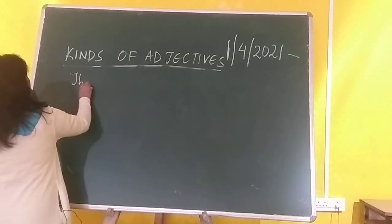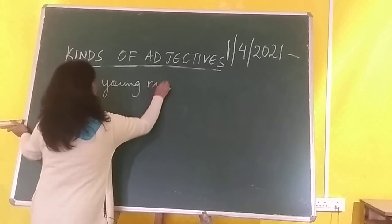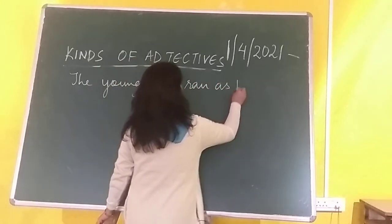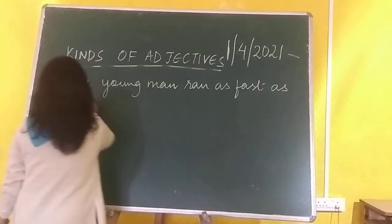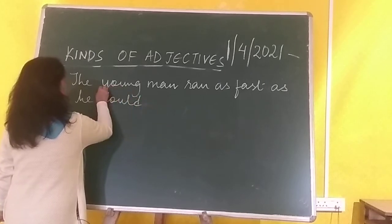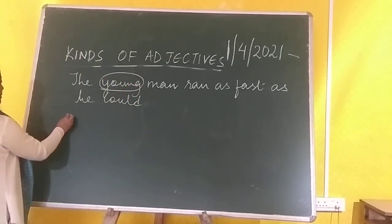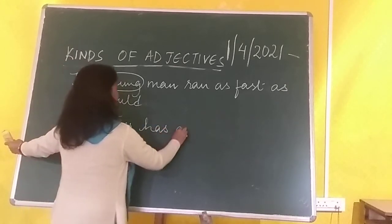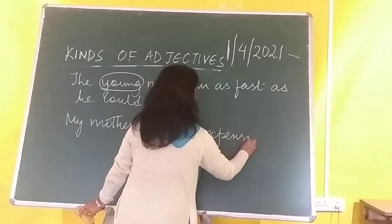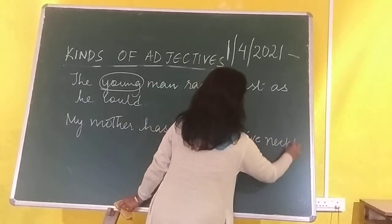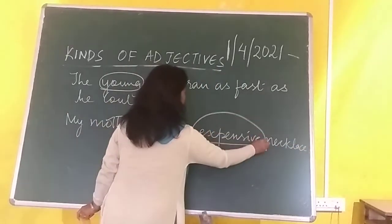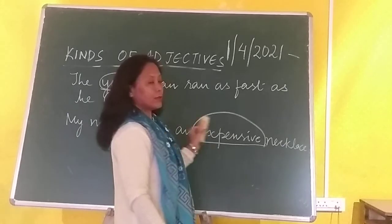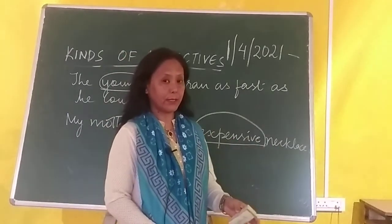So 'young' is supposed to be an adjective of quality. Similarly, 'My mother has an expensive necklace.' So 'expensive' is what? It is quality. Expensive is supposed to be quality. So adjectives of quality describe the quality of some person or some thing.